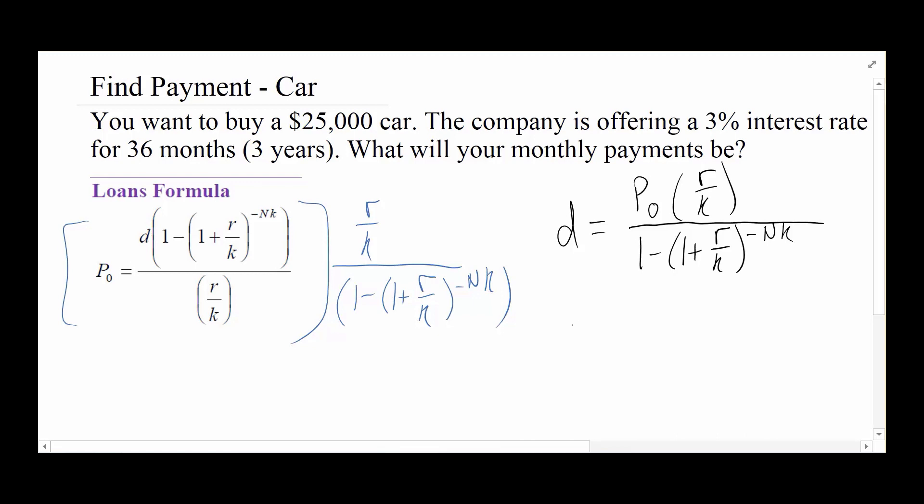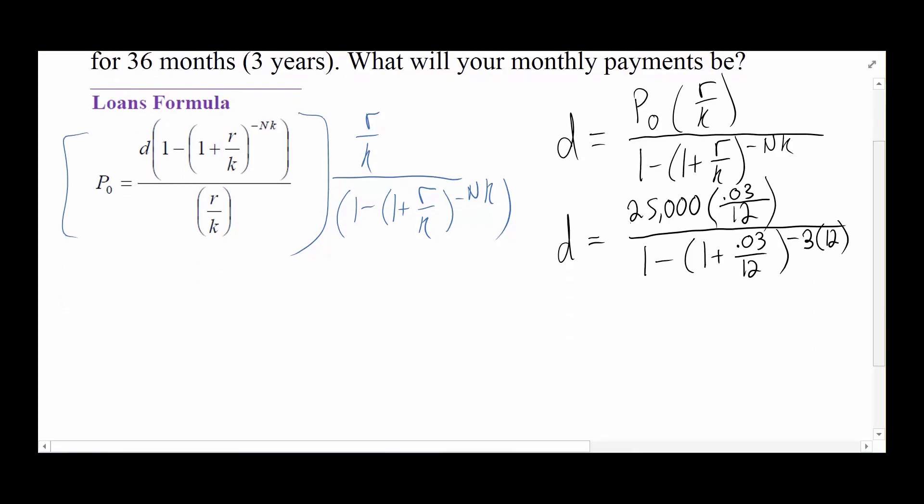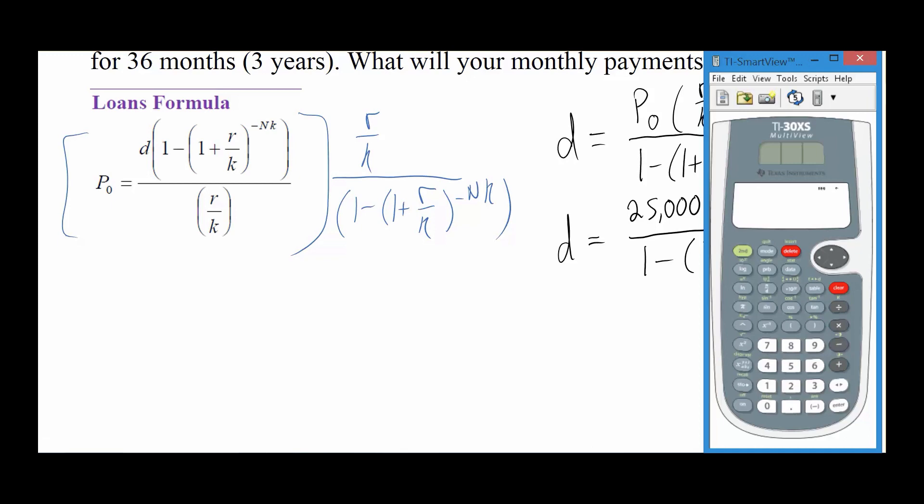Now we're just going to plug the numbers in. We're going to say the initial amount is $25,000. The interest rate is 3%. The K, or the number of computations, we're looking at the monthly payment, so this is going to be 12. All over 1 minus 1 plus 0.03 over 12 to the negative. We're doing 3 years, so remember that the capital N is always in years, times the 12.